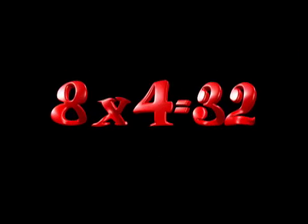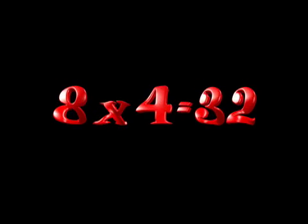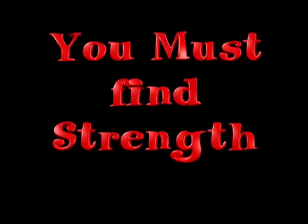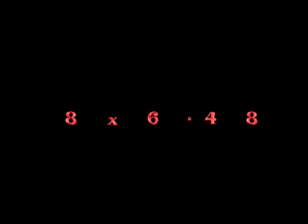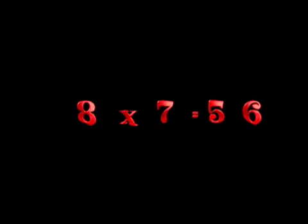You already know what's up, you already know what's up. Eight times four is thirty-two. Eight times four is thirty-two. You must find strength. 8 x 5 is 40, 8 x 5 is 40, 8 x 6 is 48, 8 x 6 is 48. 8 x 7 is 56, 8 x 7 is 56.